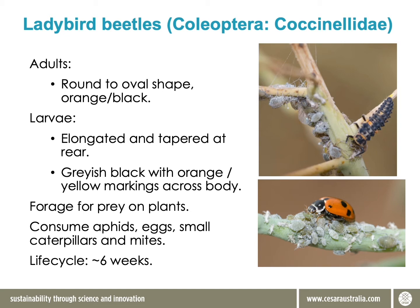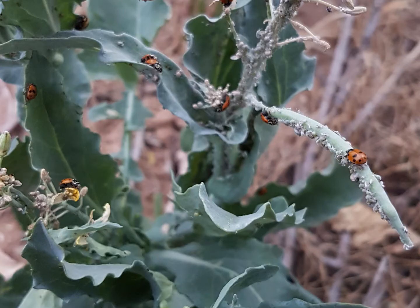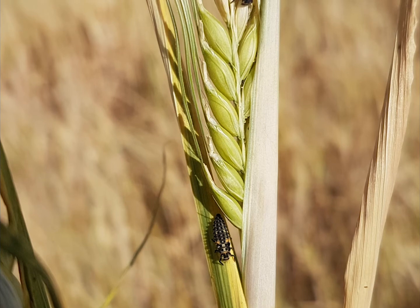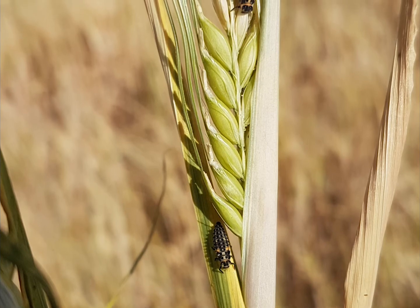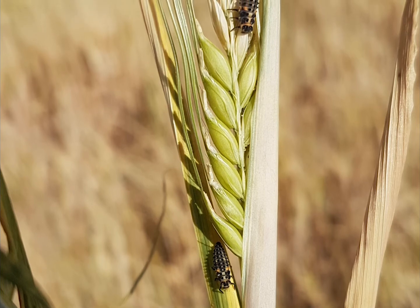The larvae look quite different to adults — they have long bodies, they're wingless, and they're typically grey in colour with orange or yellow stripes. Ladybird beetles forage for prey on plants; they don't spend a lot of time on the ground. They spend most of their time up in the canopy eating aphids, but also small caterpillars, mites, and caterpillar eggs and other eggs found in the plant canopy.